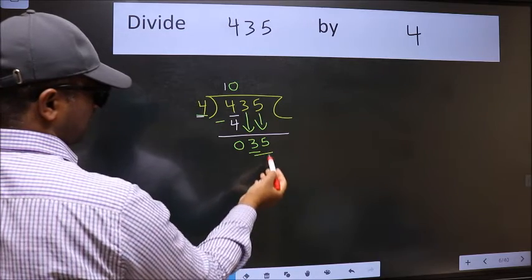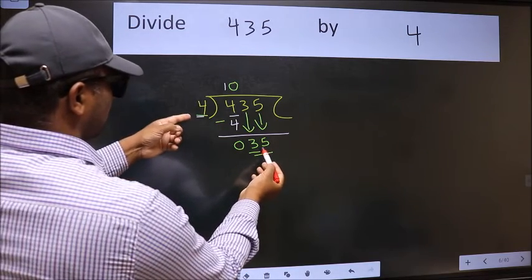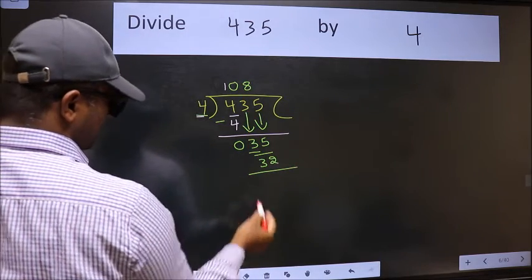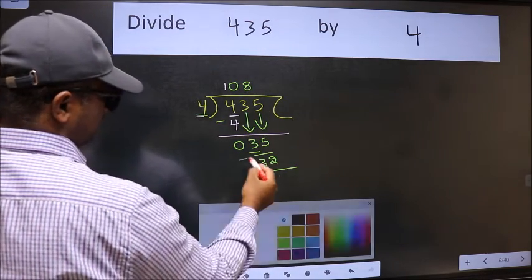Now 35. A number close to 35 in the 4 table is 4 times 8, which is 32. Now we should subtract. We get 3.